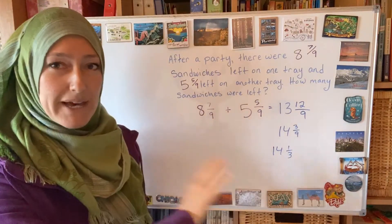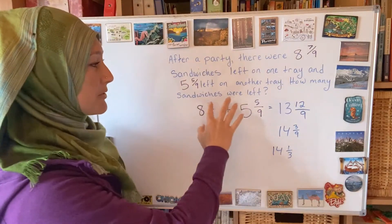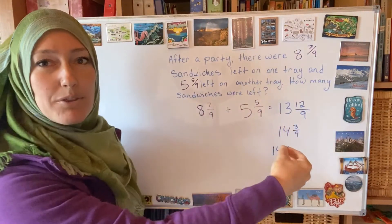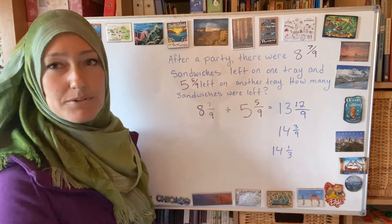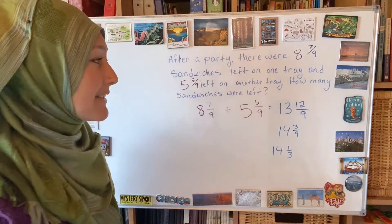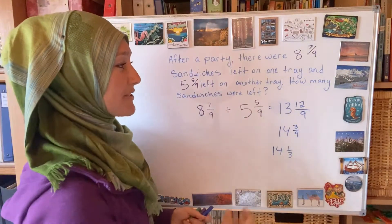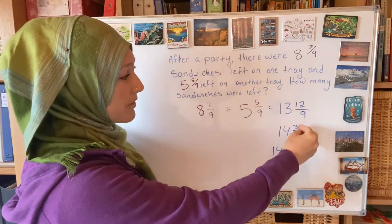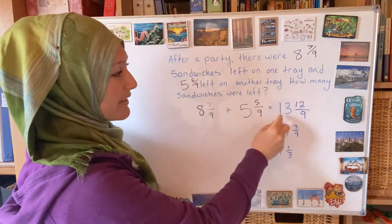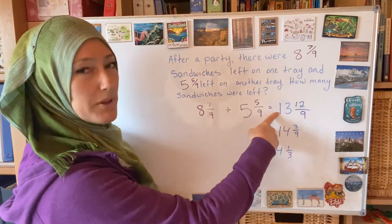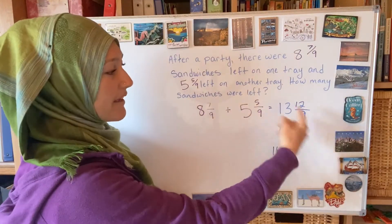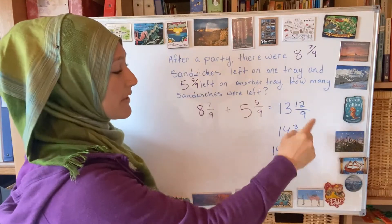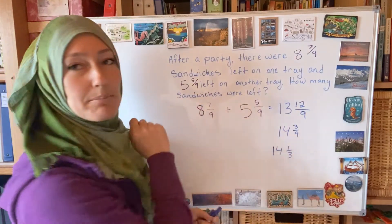When you skip past the model you can do all of this in your head. This part where you're taking out the whole amount you can also do mentally — you're taking away 9 ninths, that's one whole, and giving it to your whole amount. Then the leftover 3 is what you're left with, and then you want to simplify.